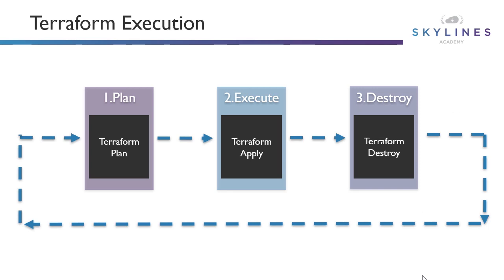How do we execute in Terraform? You saw this in the teaser video at the beginning. Essentially, we plan our deployment first with Terraform Plan, execute using Terraform Apply, and destroy using Terraform Destroy. You can force some of these without prompts, but I encourage you to use the commands as they are to begin with — Terraform Plan, Terraform Apply, Terraform Destroy — and confirm as you go through. Anytime you build something, do a plan before. It will tell you what it's going to do and check if it's even going to work before you execute.